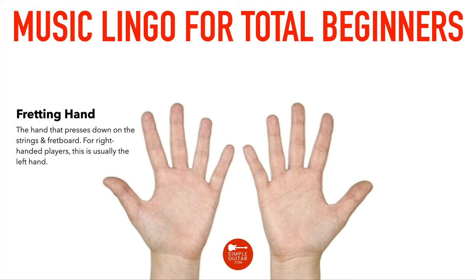The fingers on your fretting hand are numbered: first finger (index), second finger (middle), third finger (ring), fourth finger (pinky). We don't count your thumb — unlike piano players who count the thumb as the first finger, on guitar your first finger is your index finger. If you ever see notation to use your thumb on your fretting hand, it will be shown as a T.